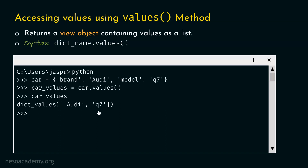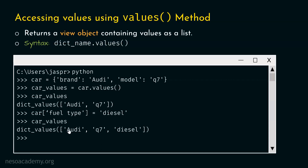Let's say we decided to add a new key-value pair: fuel type diesel. So fuel_type is the key and diesel is the value. Let's type car fuel_type equal to diesel and hit enter. Now let's check whether car_values is updated. We type car_values and hit enter. We get the view object with three values: Audi, Q7, and diesel. With this, it is clear how to access all values of a dictionary using the values method.